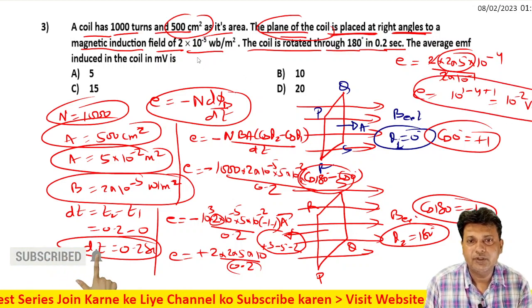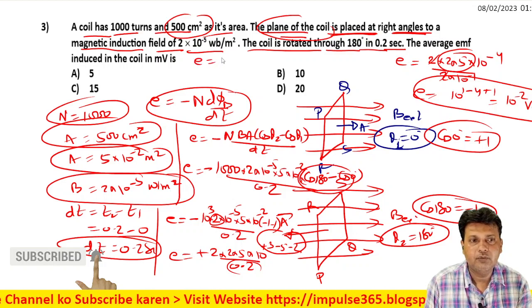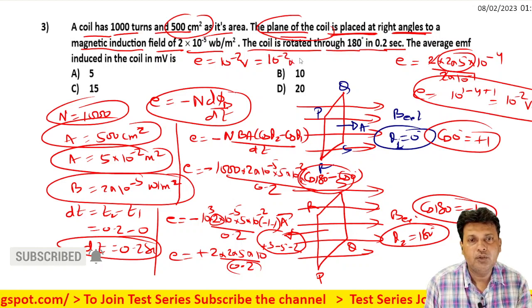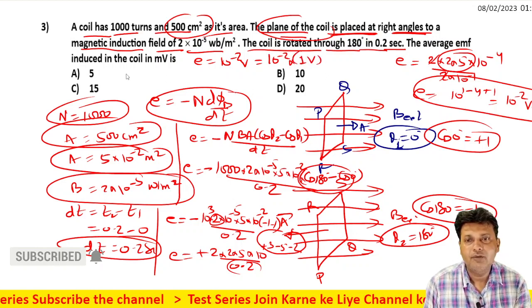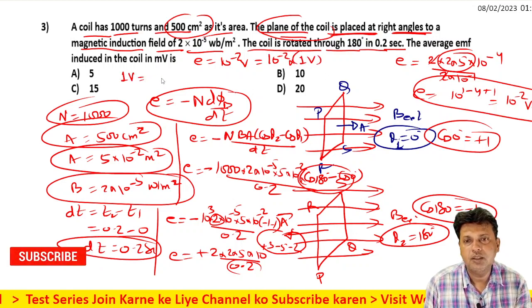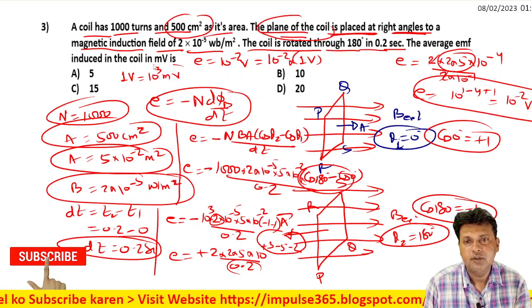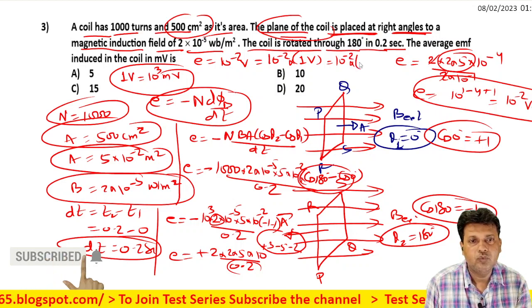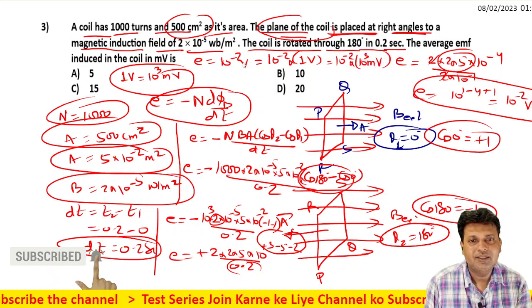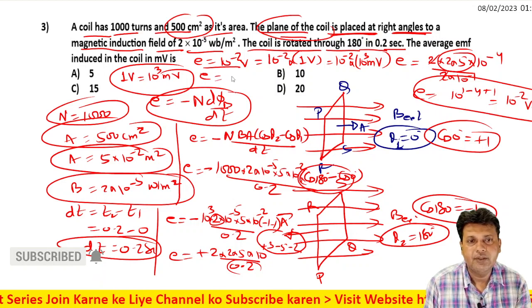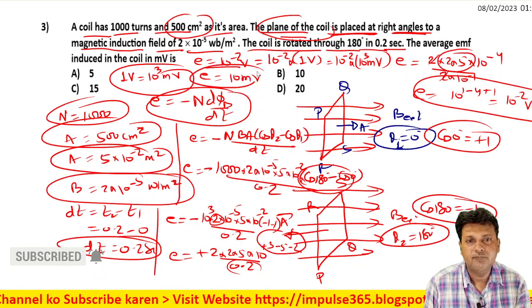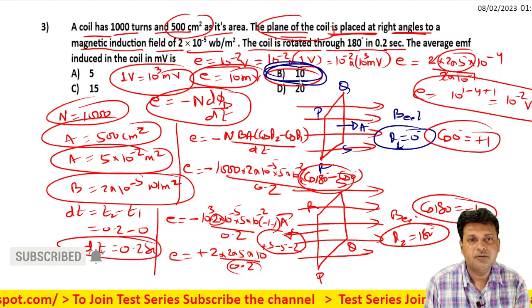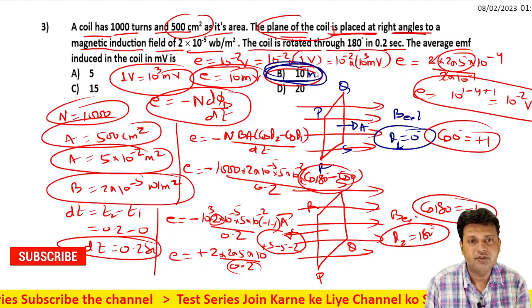The EMF value is 10 to power minus 2 volt. 10⁻² volt equals 10 millivolt, since 1 volt equals 10³ millivolt. So the EMF value is 10 millivolt. Looking at the options, option B, 10 millivolt, is the appropriate answer.